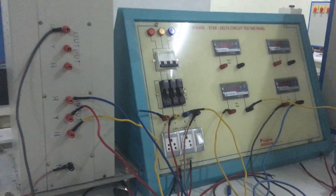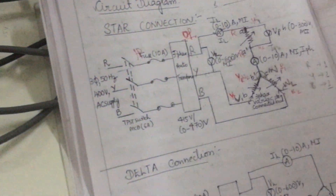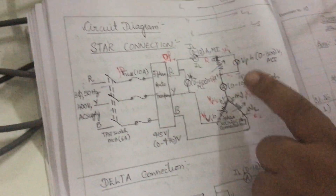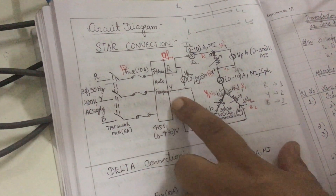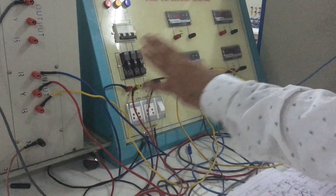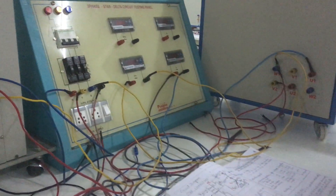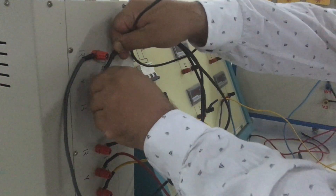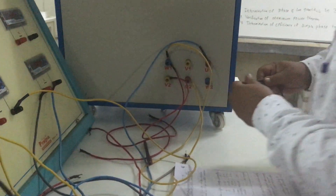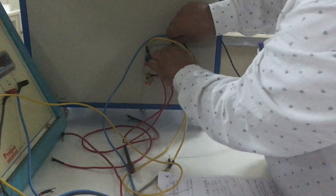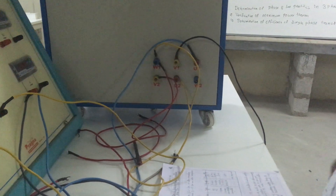The R connection is now complete: R → line ammeter → U1 → phase ammeter → U2 → shorted V2 and W1. Now for Y, take it directly and connect to V1. Similarly, connect B to W2. Once that's done, never give these output connections back to the input side — that is a common mistake.